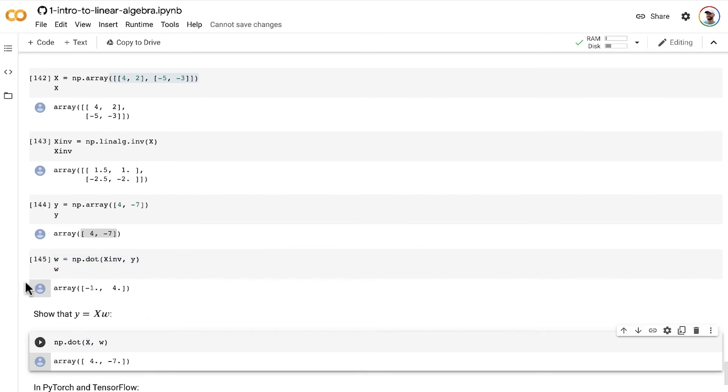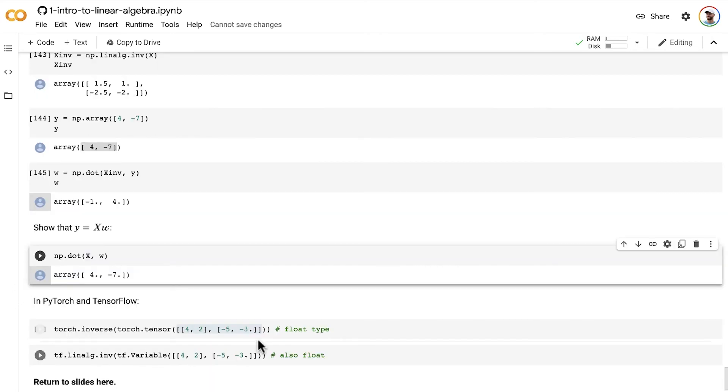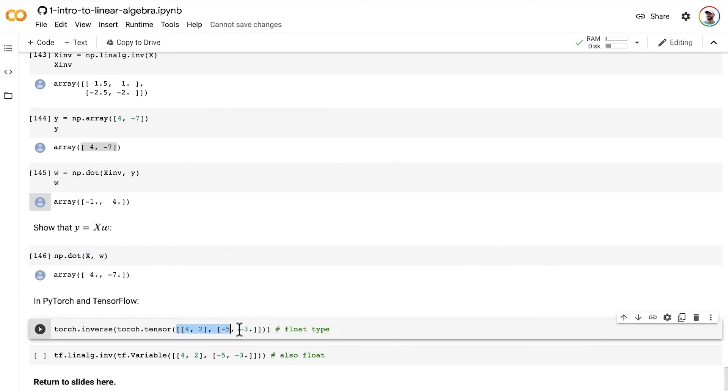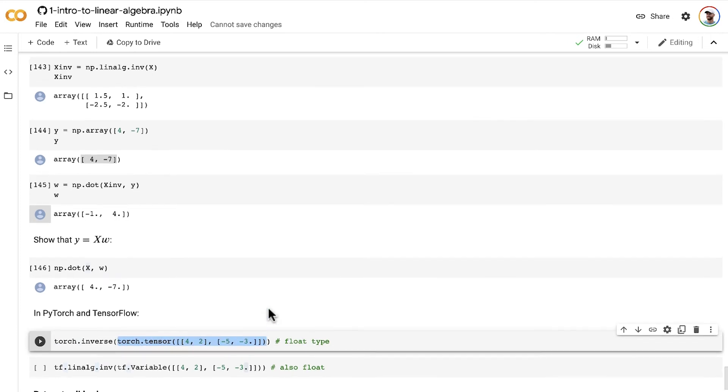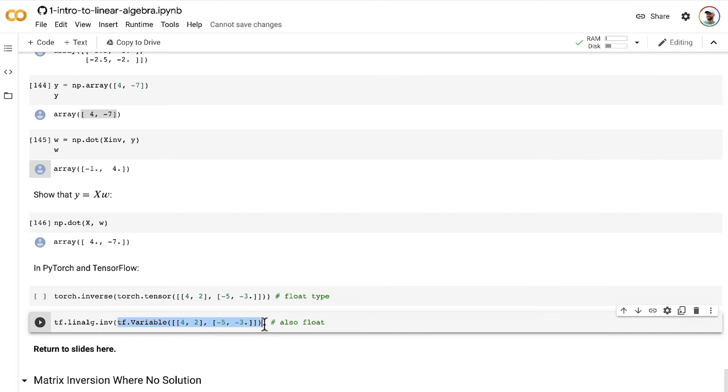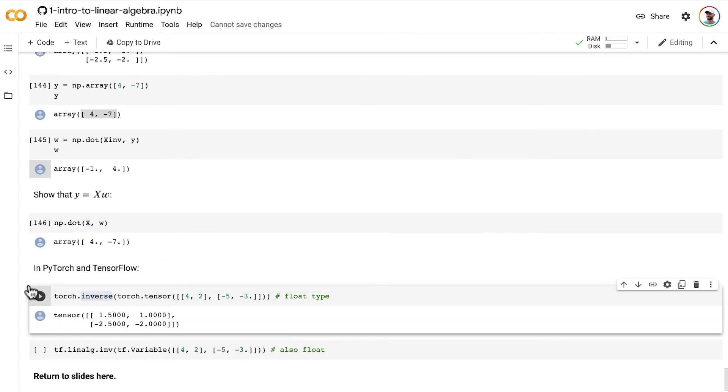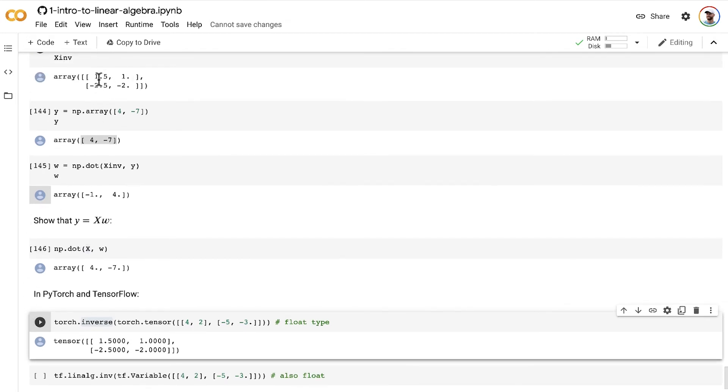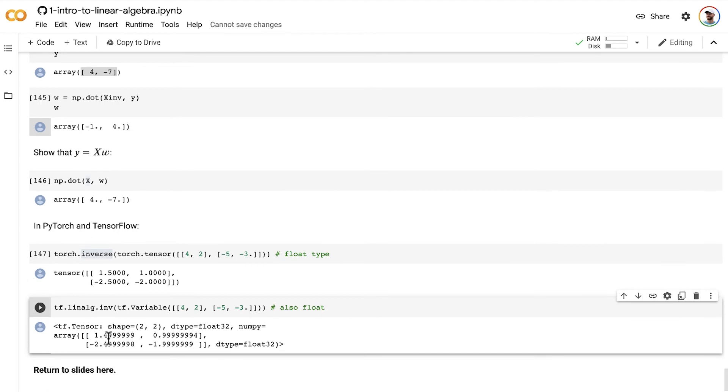So that's in NumPy, and you can also do these operations in PyTorch and TensorFlow. If you want to do it in PyTorch or TensorFlow, your matrix has to be of float type. So I added a period in both cases here to ensure that. And so creating the same matrix tensor as we had here in NumPy in both PyTorch and TensorFlow, and then passing those into the appropriate method for matrix inversion in PyTorch and TensorFlow, respectively, you end up with the same answers as we had for our inverted matrix here. So 1.5, 1, negative 2.5, and negative 2, you see they get the same thing here in PyTorch. And in TensorFlow, except for just a little bit of rounding error, you get exactly the same result as well.